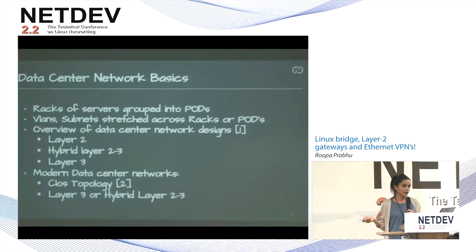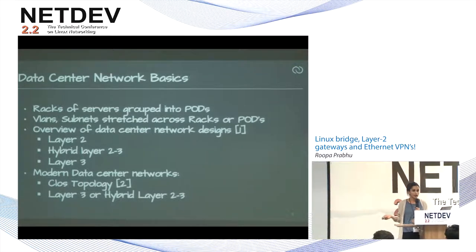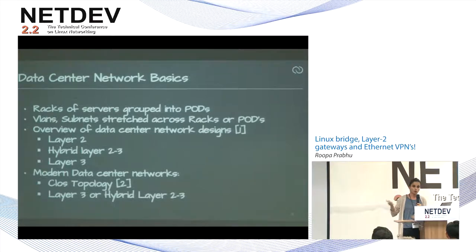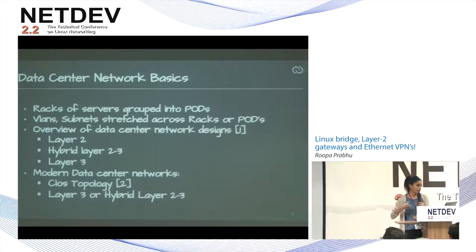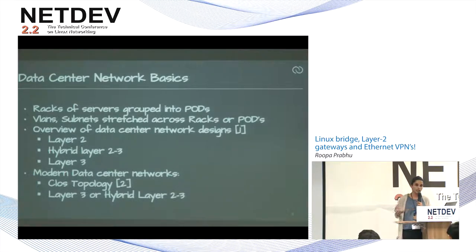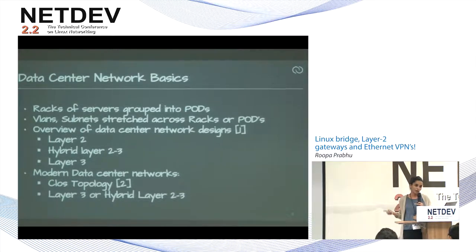Data center network basics: you have racks of servers grouped into pods. VLANs and subnets are stretched across racks or pods, and sometimes layer two networks are stretched across data centers because of companies merging or different administrative domains merging. There are three types: layer two — completely VLANs everywhere — hybrid, which is layer two and layer three, and layer three only, which is all routing.